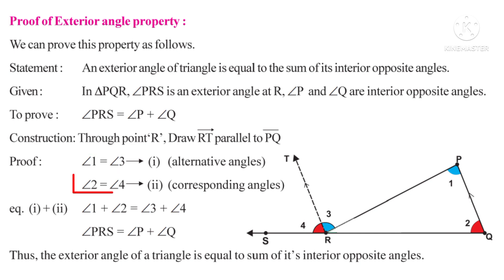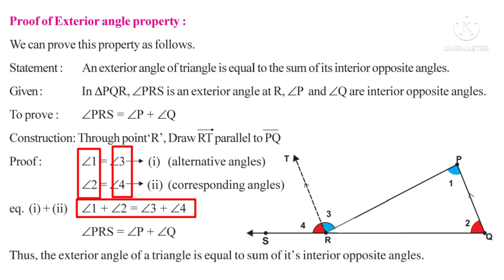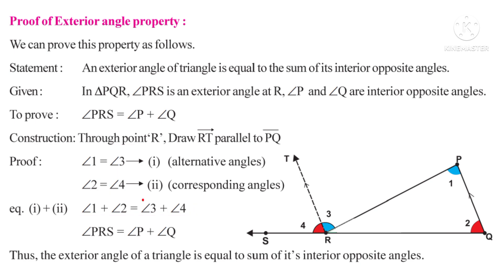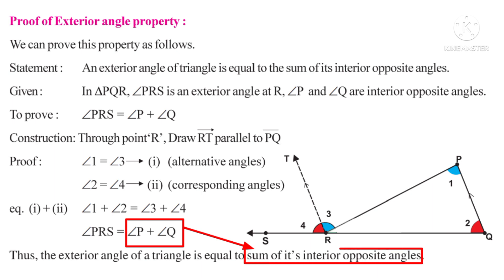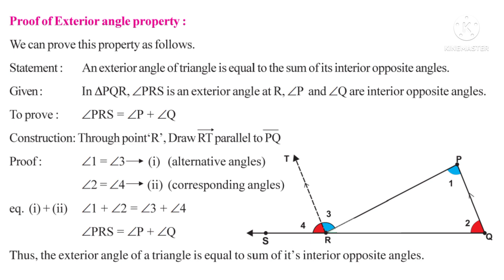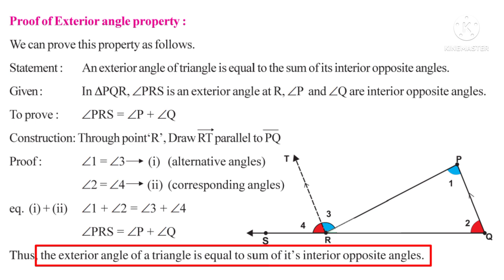Since RT is parallel to PQ, angle 1 is equal to angle 3 (equation 1), because alternate angles are equal, shown in blue color. Angle 2 is equal to angle 4 (equation 2), because corresponding angles are equal, shown in red color. By adding equations 1 and 2, angle 1 plus angle 2 is equal to angle 3 plus angle 4. In the figure, angle 3 plus angle 4 represents angle PRS, while angle 1 represents angle P and angle 2 represents angle Q. Thus, the exterior angle of a triangle is equal to the sum of its interior opposite angles.